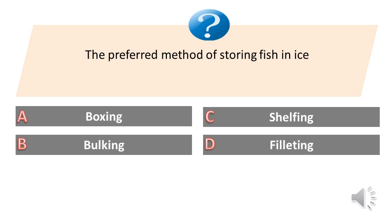The preferred method of storing fish in ice. A. Boxing. B. Bulking. C. Shelfing. D. Filleting. Answer is A. Boxing.